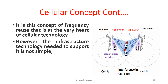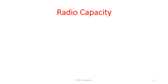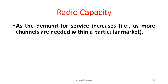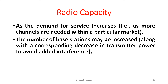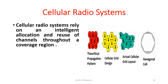However, the infrastructure technology needed to support it is not simple, and it required a significant investment to bring the first cellular networks online. As the demand for service increases and more channels are needed within a particular market, the number of base stations may be increased along with a corresponding decrease in transmitter power to avoid interference, thereby providing additional radio capacity with no additional increase in radio spectrum.